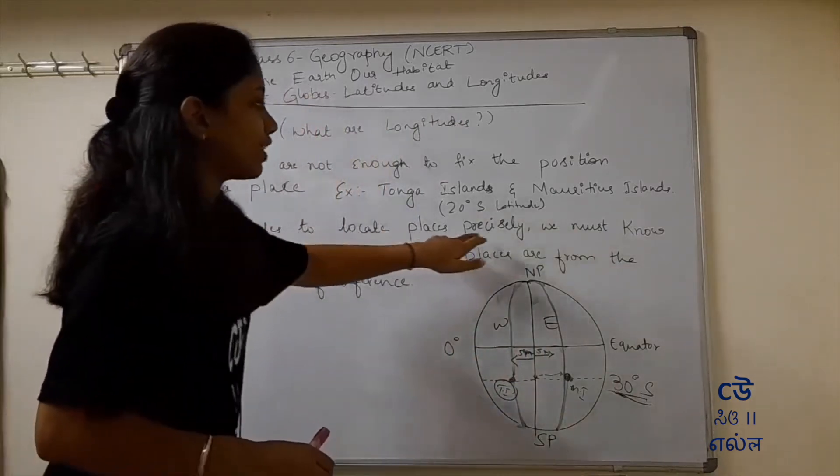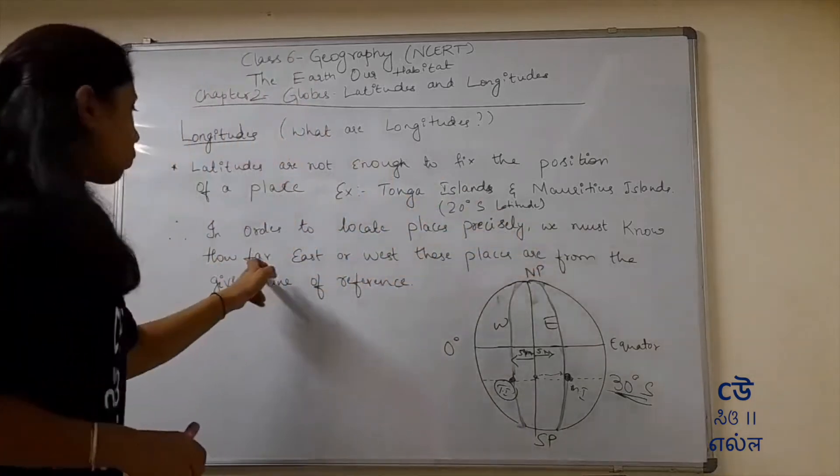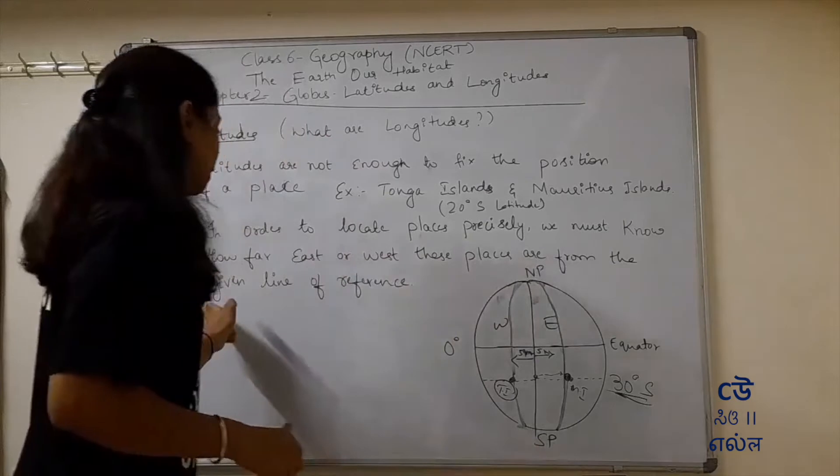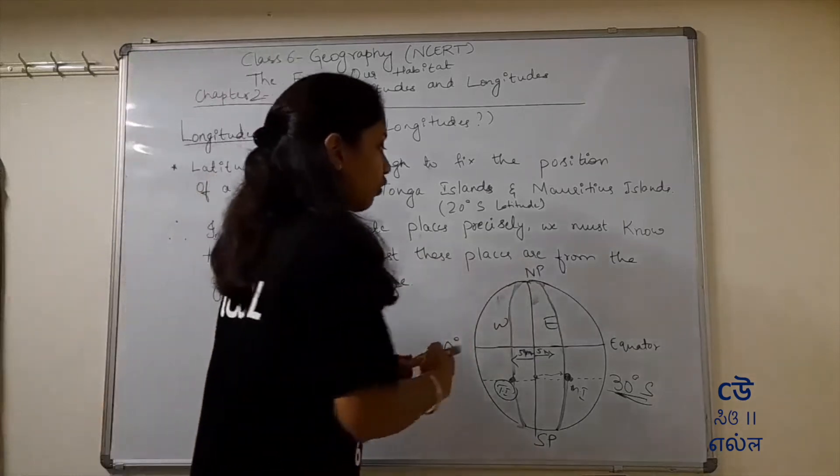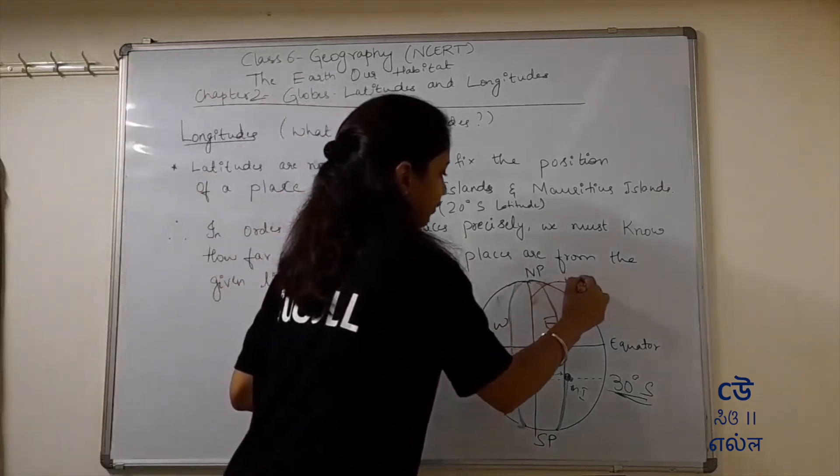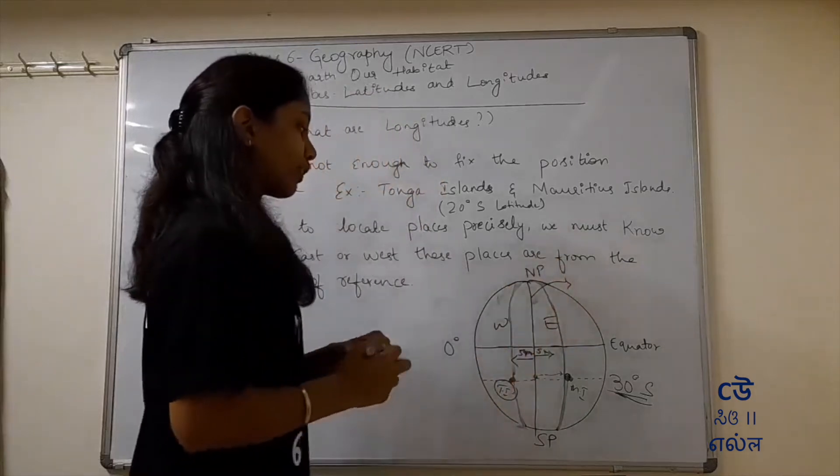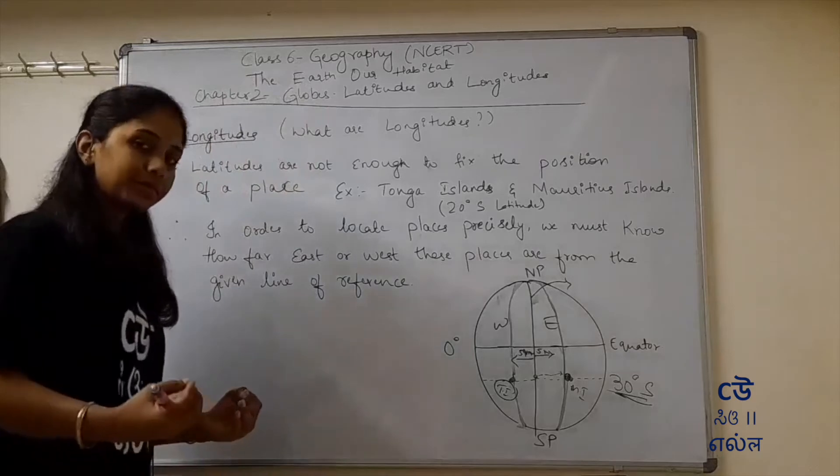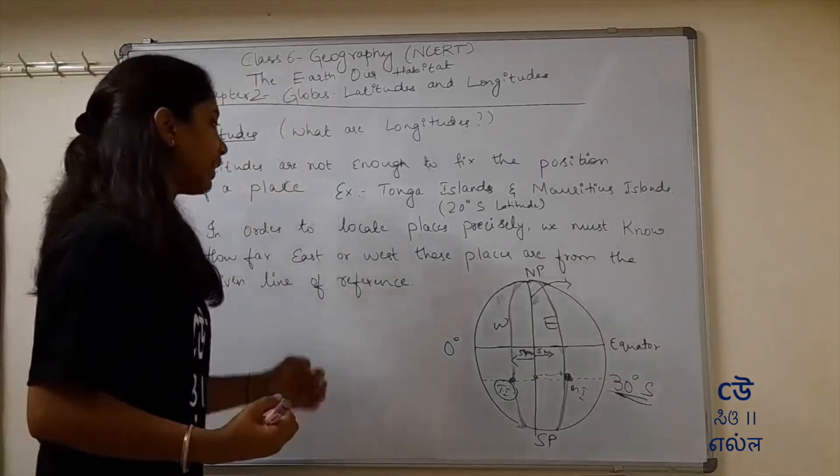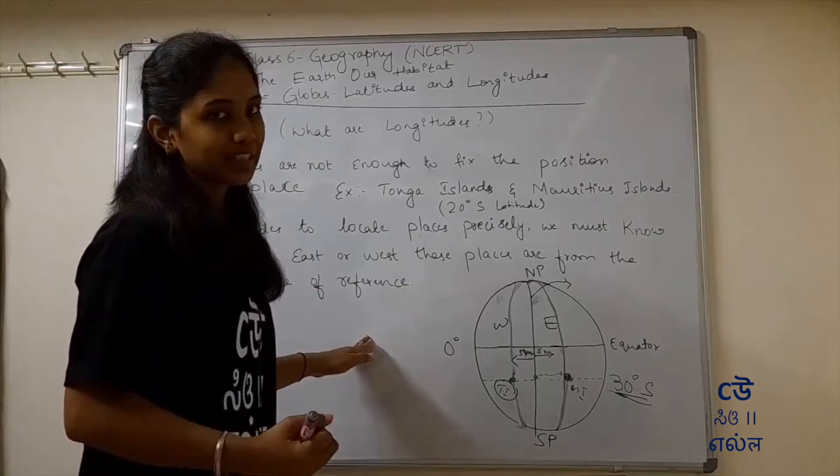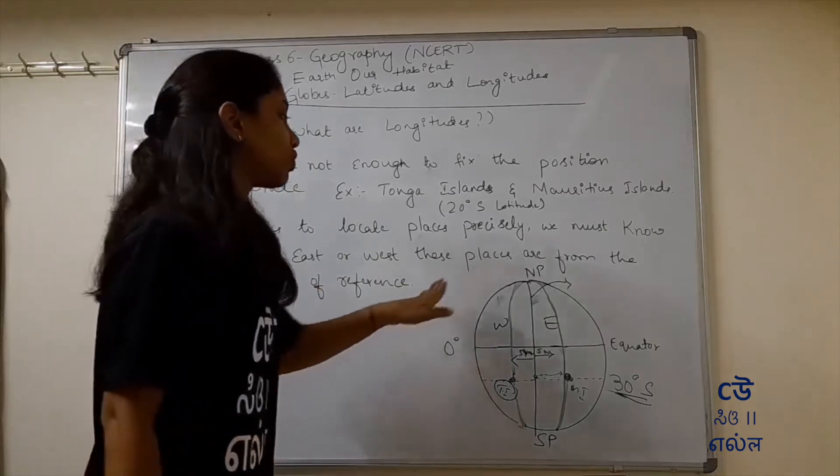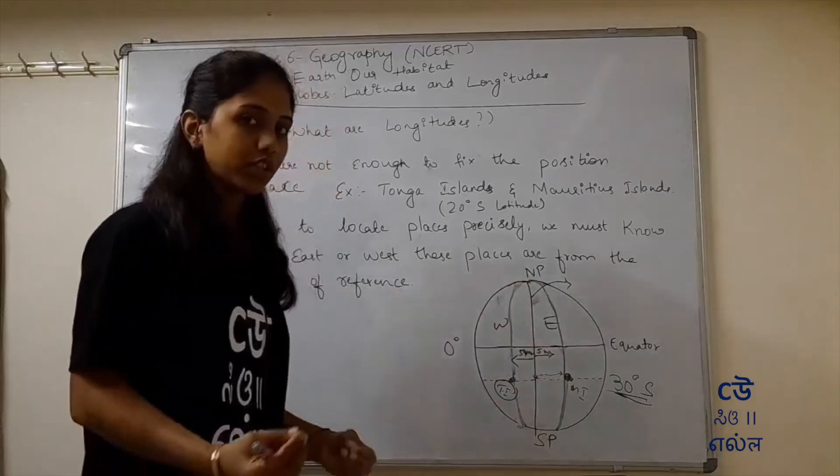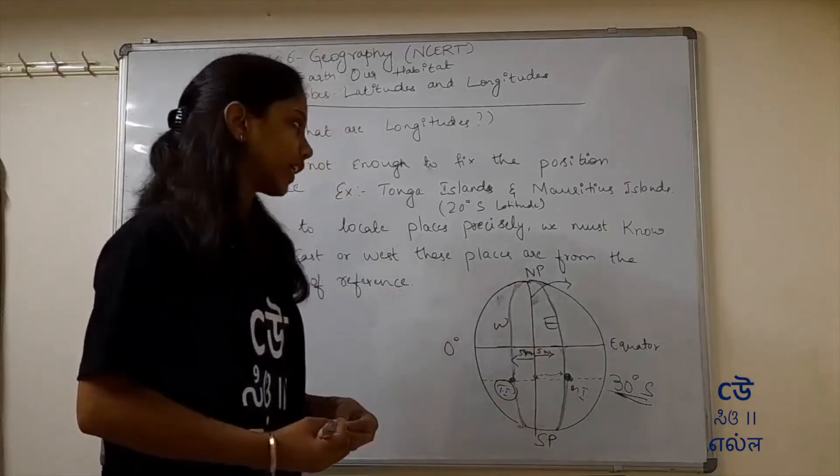So in order to locate places precisely, we must know how far east or west these places are from the given line of reference. So this we should consider from the line of reference. So if it's 5 kilometers west or 5 kilometers east, if you say this, we can locate that exact place. So this is called longitudes.